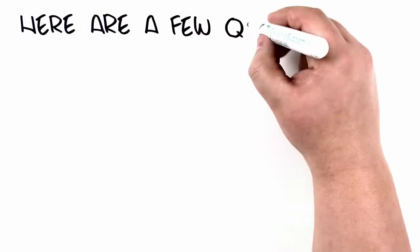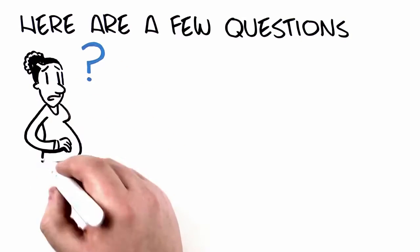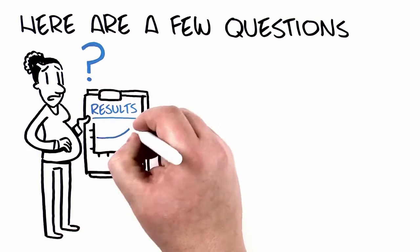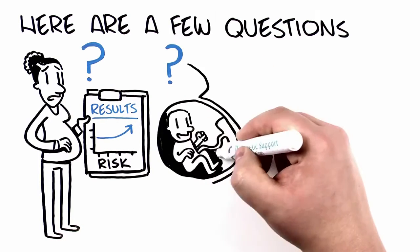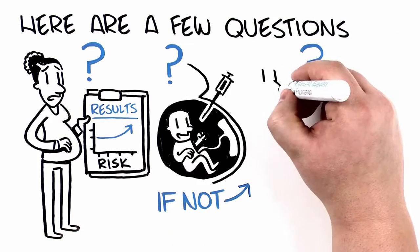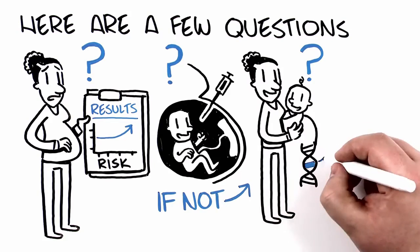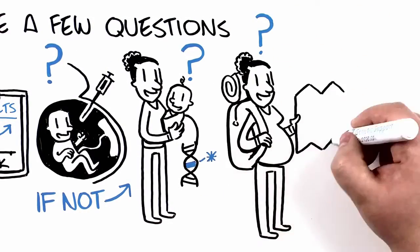Here are a few questions to consider to help you decide if NIPT is right for you. How would you feel if results indicated a higher risk for a genetic condition? Would you consider amniocentesis? If not, would you be okay waiting until the baby is born to know for sure if the condition is present? Do you think this information would help you feel more prepared?